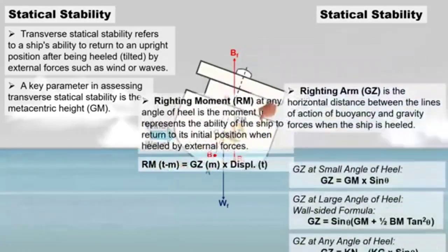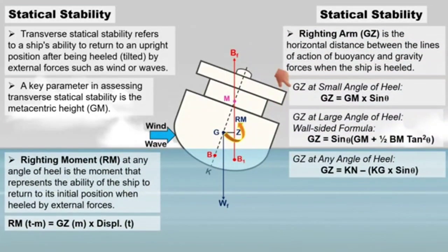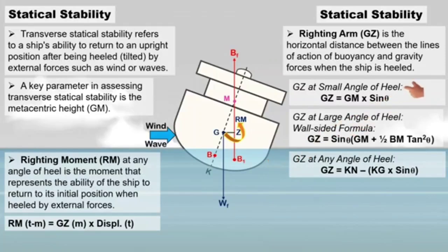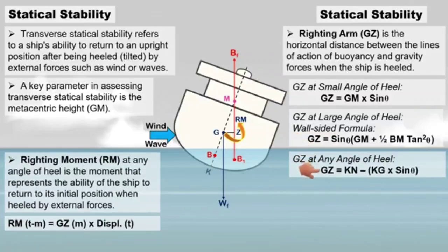There are several formulas for determining the righting lever. In these formulas, theta represents the angle of heel. When a vessel is heeled at 10 degrees or less, it is considered a small angle of heel, and you can use this formula. At a large angle of heel, a wall-sided formula must be used. This formula can be used at both small and large angles of heel.